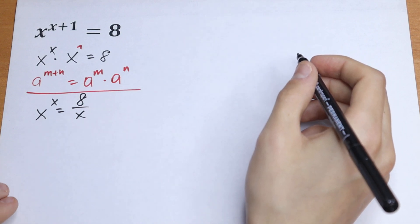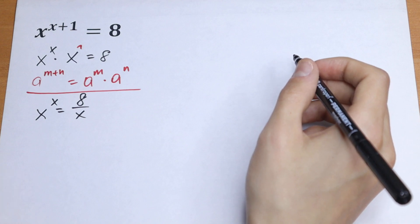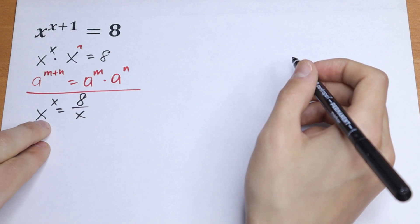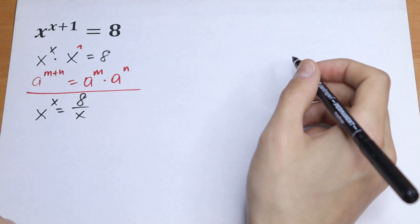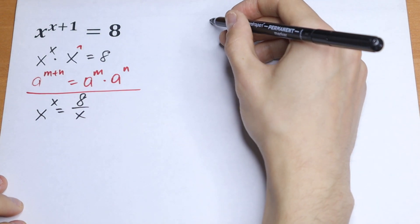And in this case, it's really good to draw a graph, because we have x to the power x, we can draw that function, and 8 over x, which will be our hyperbola. So let's do this, let's draw a graph right here.